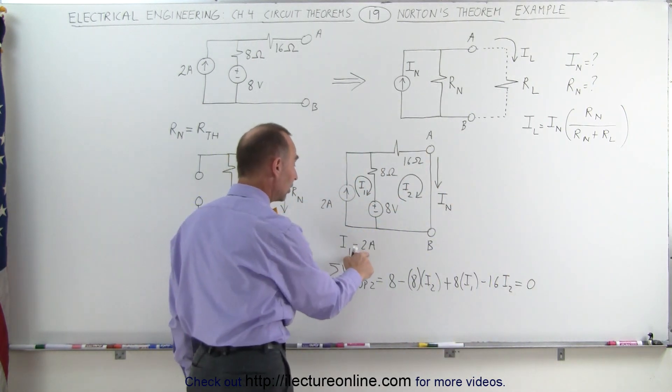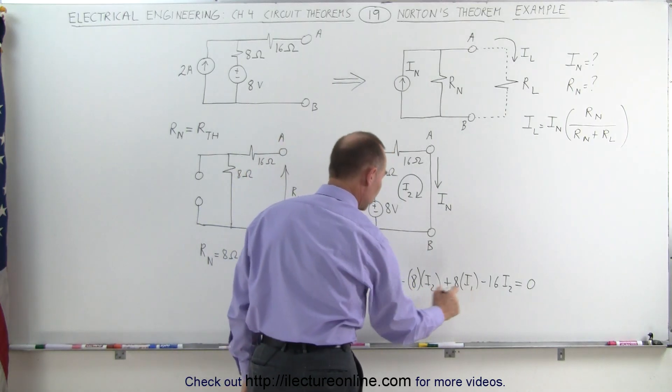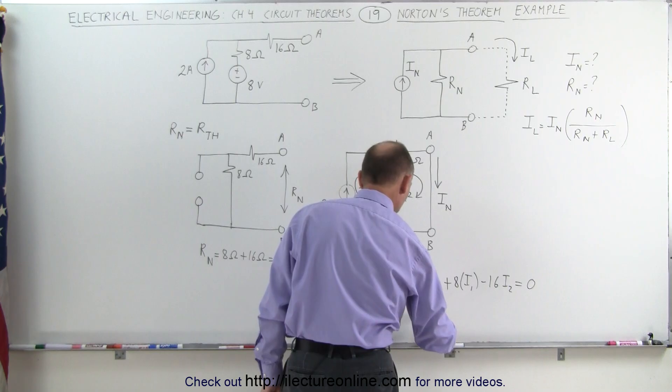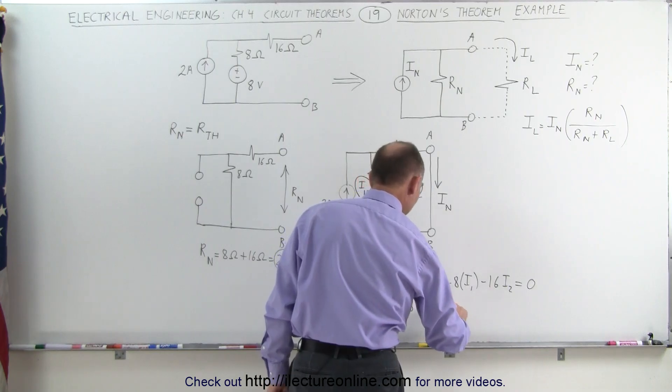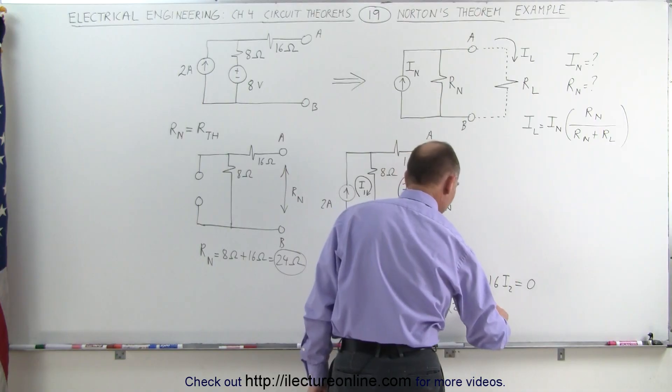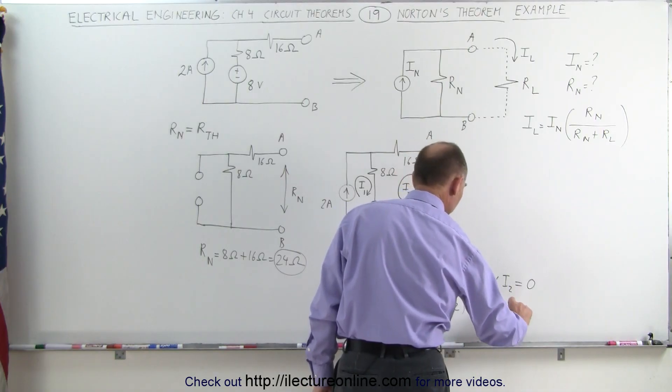Now knowing that I1 is equal to 2 amps, I can replace this by 2, so we get 8, minus 8 I2, plus 8 times I1, which is 2 amps, minus 16 I2 equals 0.